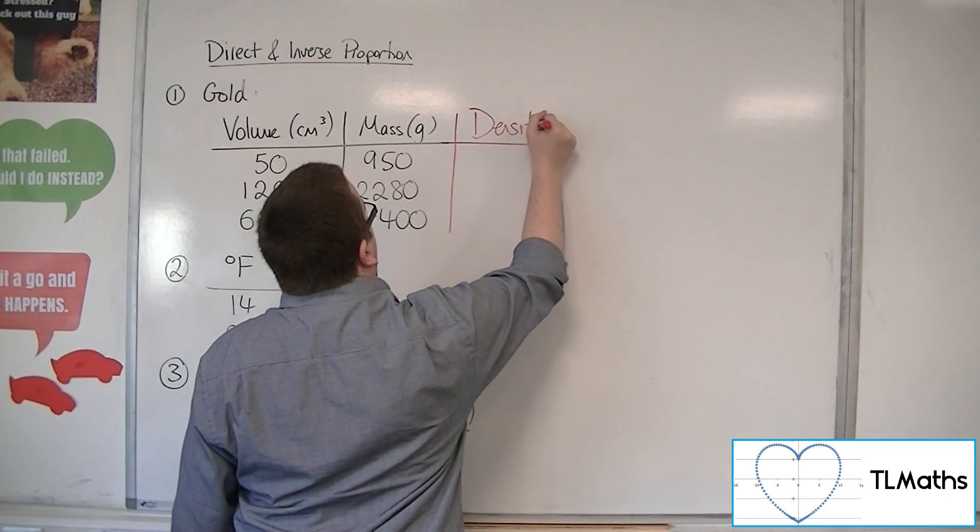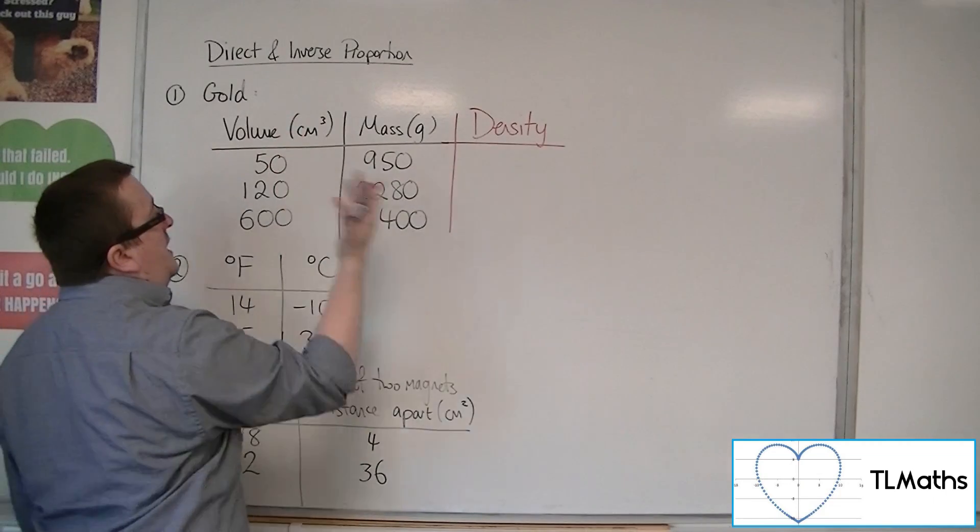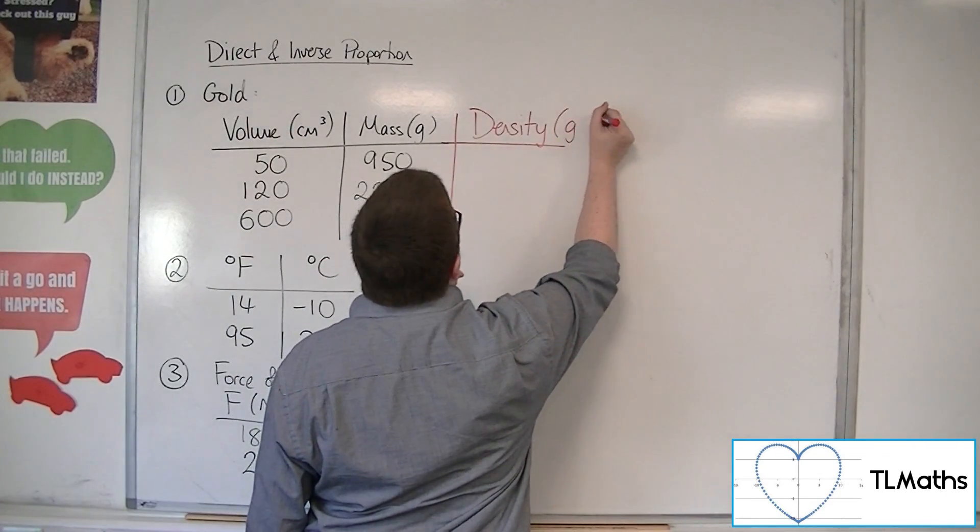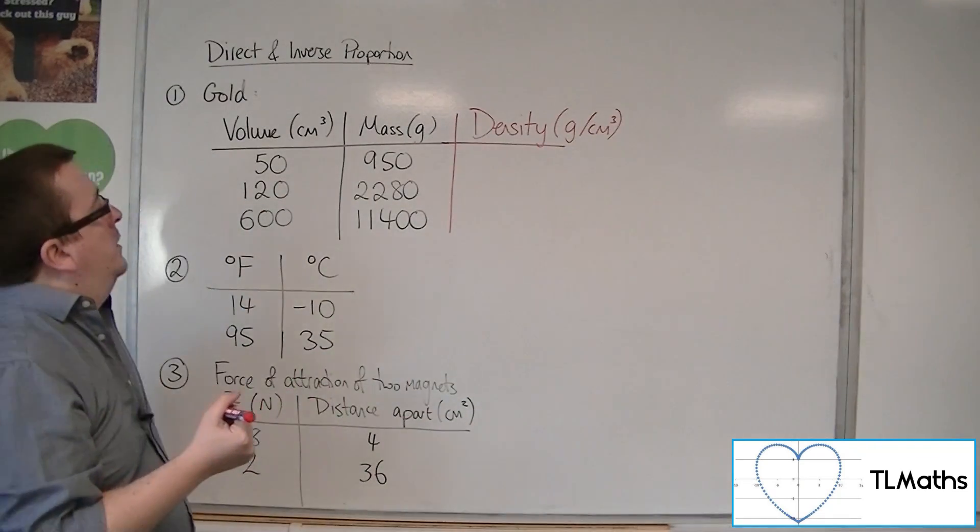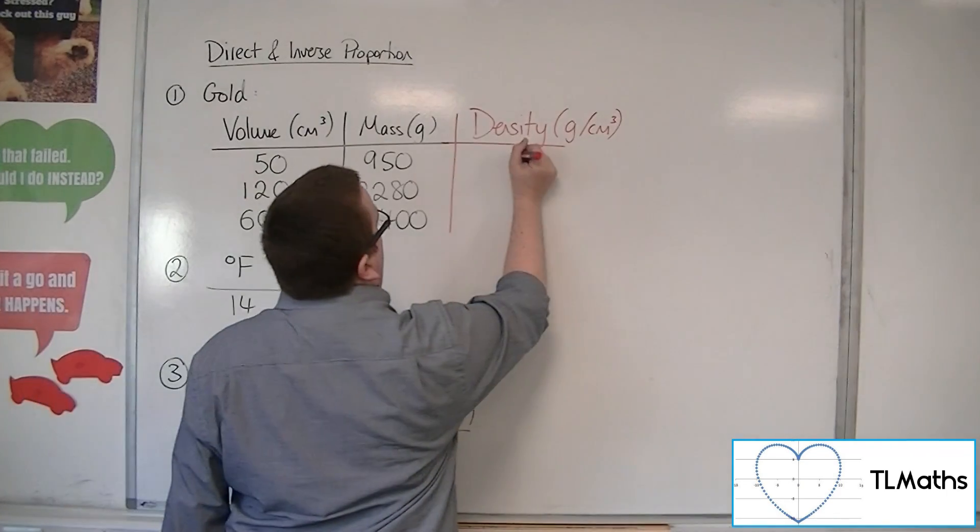Now, density is found by taking the mass and dividing it by the volume. So this is grams per cubic centimeter.